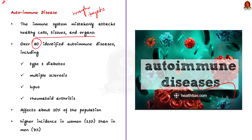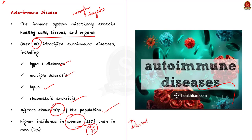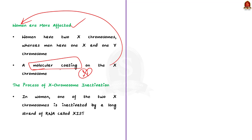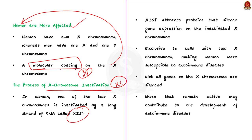A recent discovery suggests that a molecular coating on the X chromosome could be a key factor in the higher rate of autoimmune diseases in women. This involves a process called X chromosome inactivation, where out of two sets of chromosomes in a female body, one set is inactivated. This is done by a long strand of RNA called XIST, found in the molecular coating on the X chromosome. XIST attracts proteins and silences gene expression. Since it is expressed only in cells with two X chromosomes, women are more susceptible to autoimmune diseases. However, not all genes on the X chromosome get silenced — those that remain active might trigger autoimmune disease. Note that the majority of autoimmune diseases are chronic and there is no definite cure.